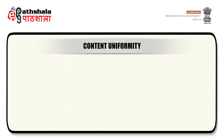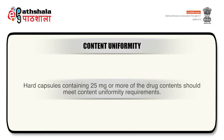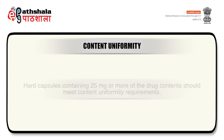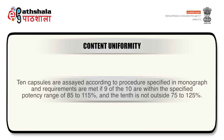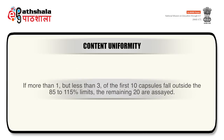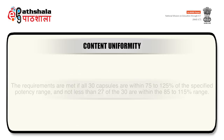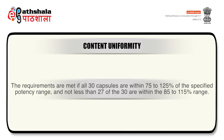For content uniformity: hard capsules containing 25 mg or more of drug should meet content uniformity requirements. Ten capsules are assayed and requirements are met if 9 of the 10 are within the specified potency range of 85–115% and the 10th is not outside 75–125%. If more than 1 but fewer than 3 of the first 10 fall outside 85–115%, 20 more are tested. Requirements are met if all 30 are within 75–125% of the specified potency range and not fewer than 27 of the 30 are within 85–115%.